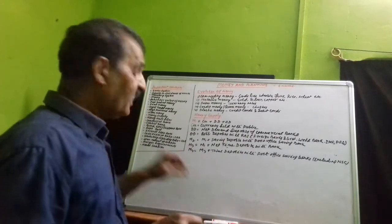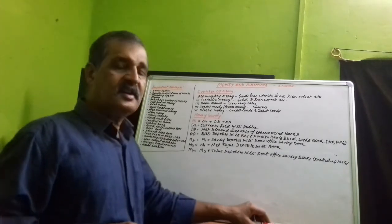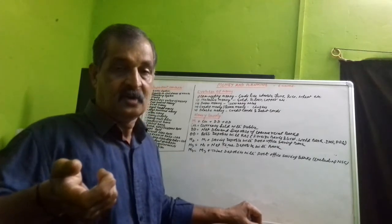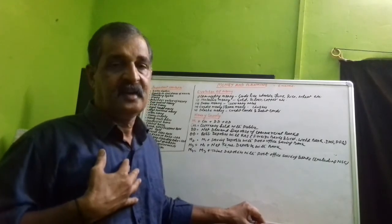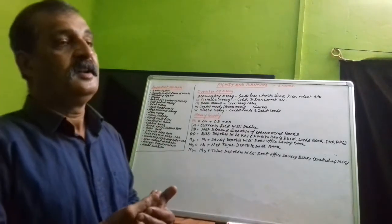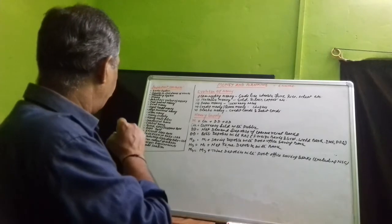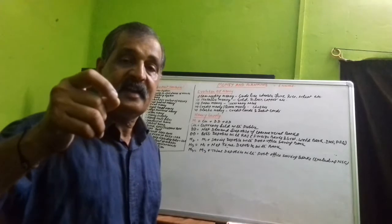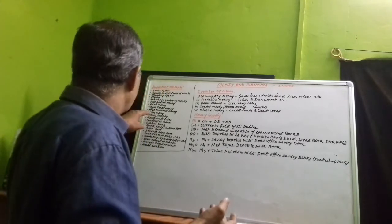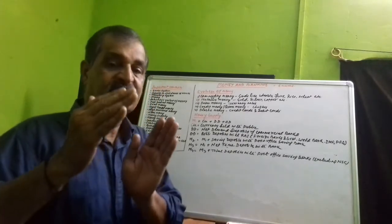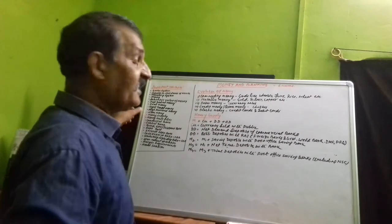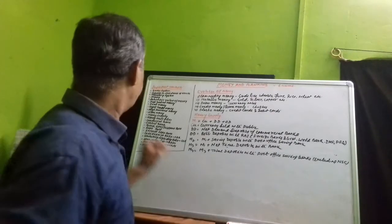Near money — कुछ ऐसी चीज़ें होती हैं जिनको हम easily cash में convert कर सकते हैं। जैसे हमारे पास bills हैं, bonds हैं — इनको हम जब चाहें cash कर सकते हैं। लेकिन जिस तरह एक check issue करके हम bank से तुरंत पैसे निकाल सकते हैं, इसमें कुछ समय लग सकता है। लेकिन इसको भी money में convert किया जा सकता है — इसलिए bills of exchange etc. are known as near money। Gold भी near money के रूप में use कर सकते हैं।